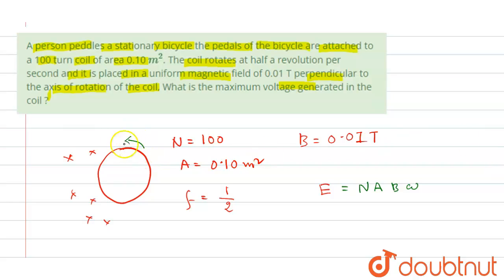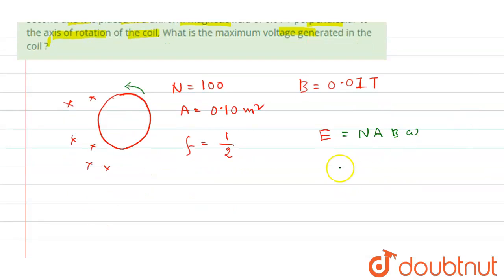Now number of turns is 100, area is also given which is 0.1, multiplied by strength which is also given 0.01, multiplied by we can write twice pi f.